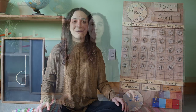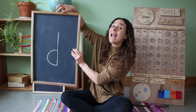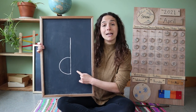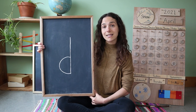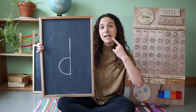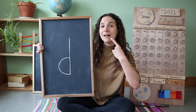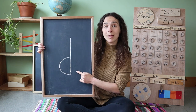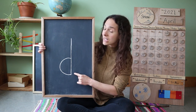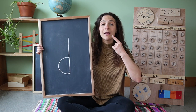Let's move on to the number, the letter, and the sign of the week. Do you remember what sound this letter makes? This letter says 'duh.' Can you make that sound? Duh. And do you remember what letter this is called? D. That's right — this is a lowercase d, and d says 'duh.'